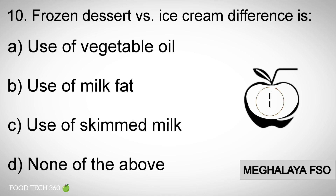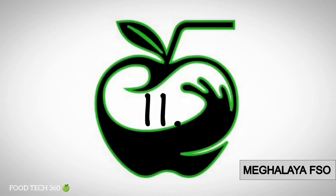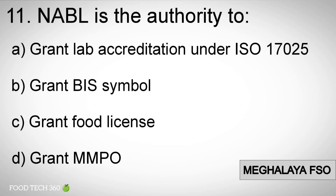Correct answer: A) use of vegetable oil. Question number 11: NABL is the authority to — options: A) grant lab accreditation under ISO 17025, B) grant BIS symbol, C) grant food license, D) other.